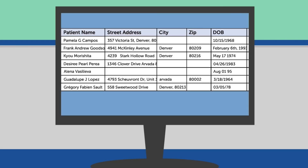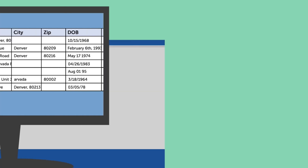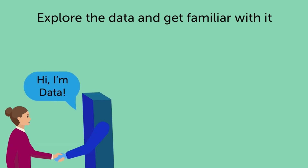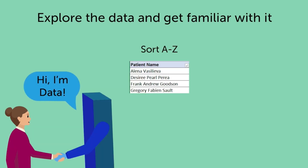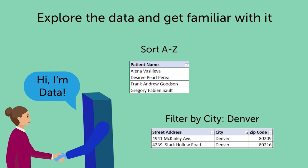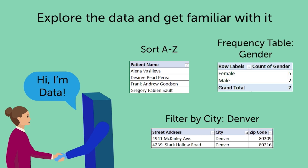This makes analysis very difficult. Computers cannot analyze data when formats do not match up. Some things you can do to clean up messy data include: explore the data and get familiar with it. You can do this by using Excel and sorting the data by columns, filtering the data, or creating frequency tables of the categorical variables, such as gender. A frequency table would just have the total number of each category of gender in this case.